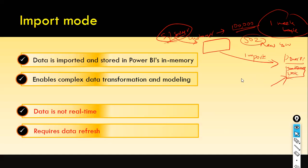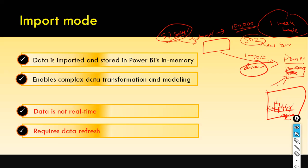Suppose you are using direct query mode instead of import mode. In your Power BI report, you have a column chart showing north, south, southeast, west, and east regions with sales data from your SQL Server. You have a slicer in your report. When the user selects north and south region, Power BI reads the data directly from your SQL Server customer table each time you make a change in the slicer.